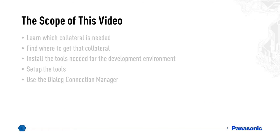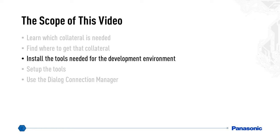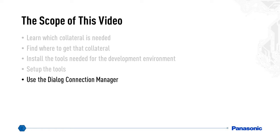The scope of this video is to walk new users through the steps needed to set up the development environment on a PC with a Windows operating system. The video will cover the collateral needed to evaluate and develop software for the PAN 1740, where to find the tools and documents, how to download and install tools like the Keil and J-Link, the two main software development tools, the Dialog tools, and the setup of the connection manager.